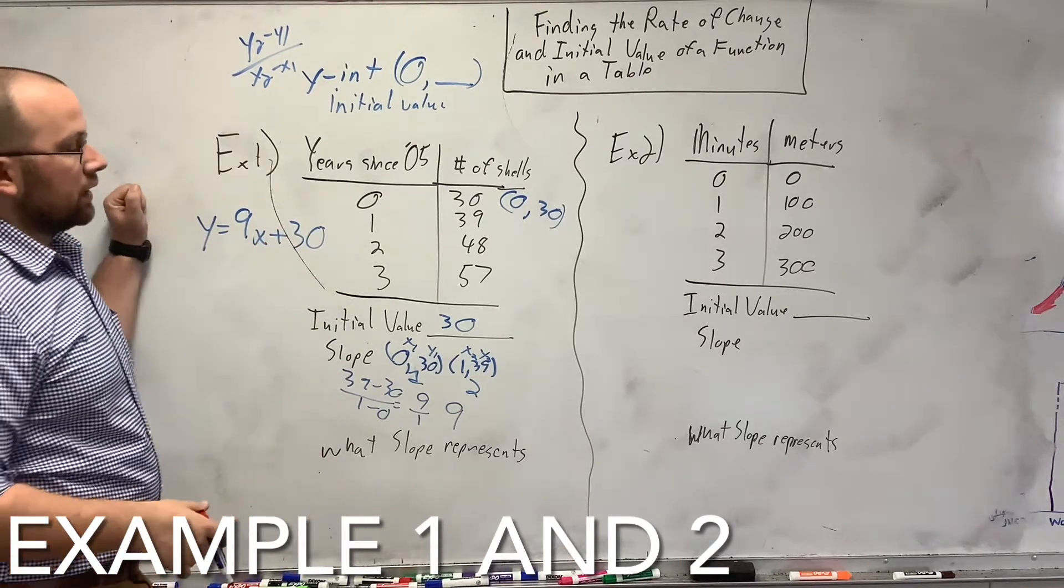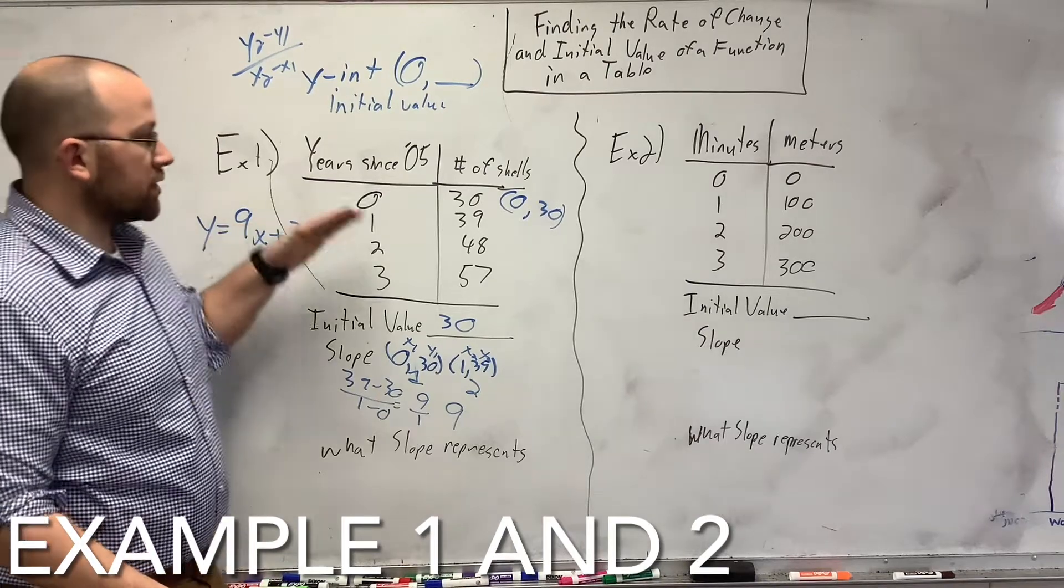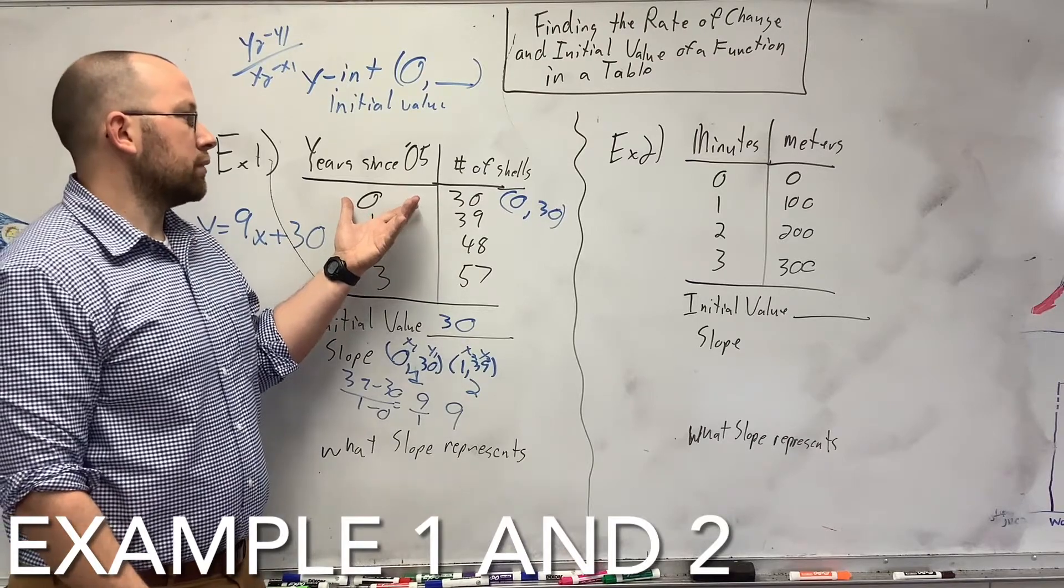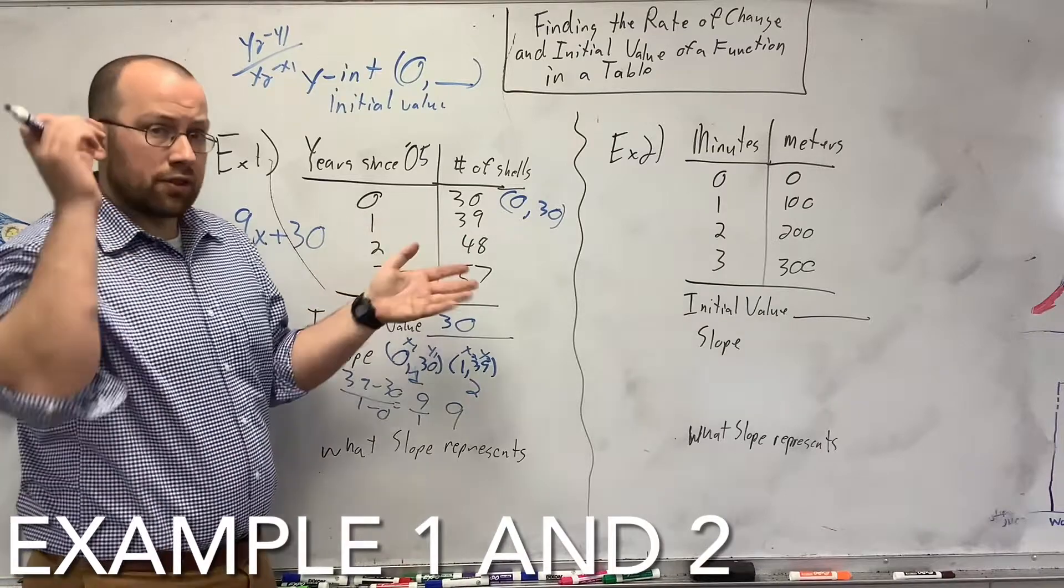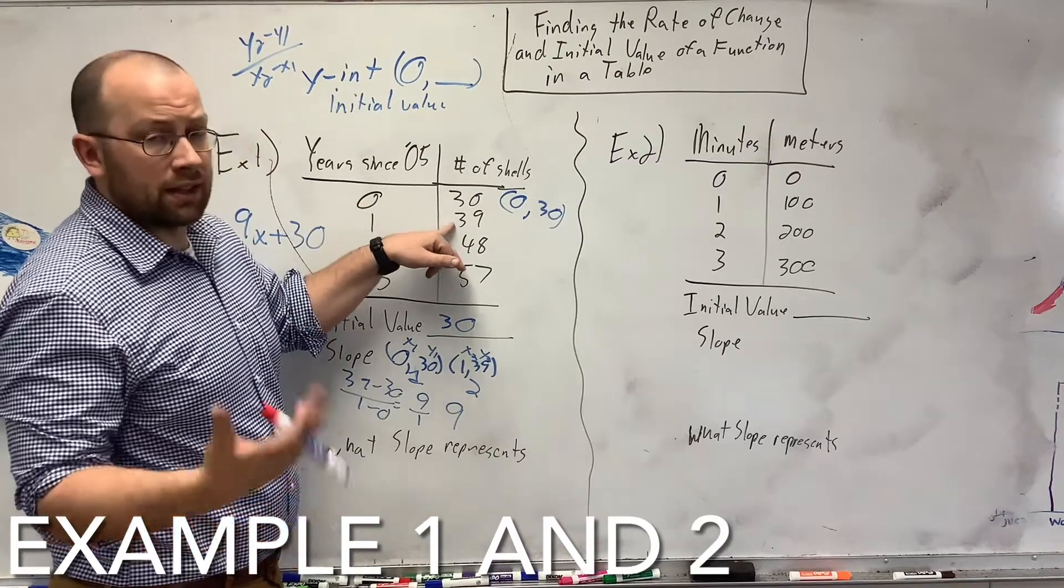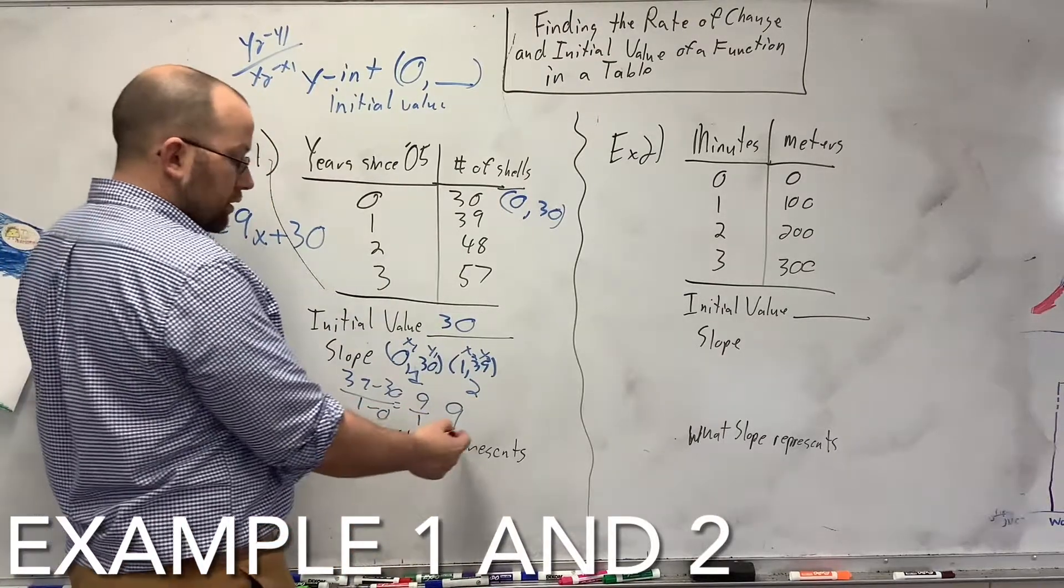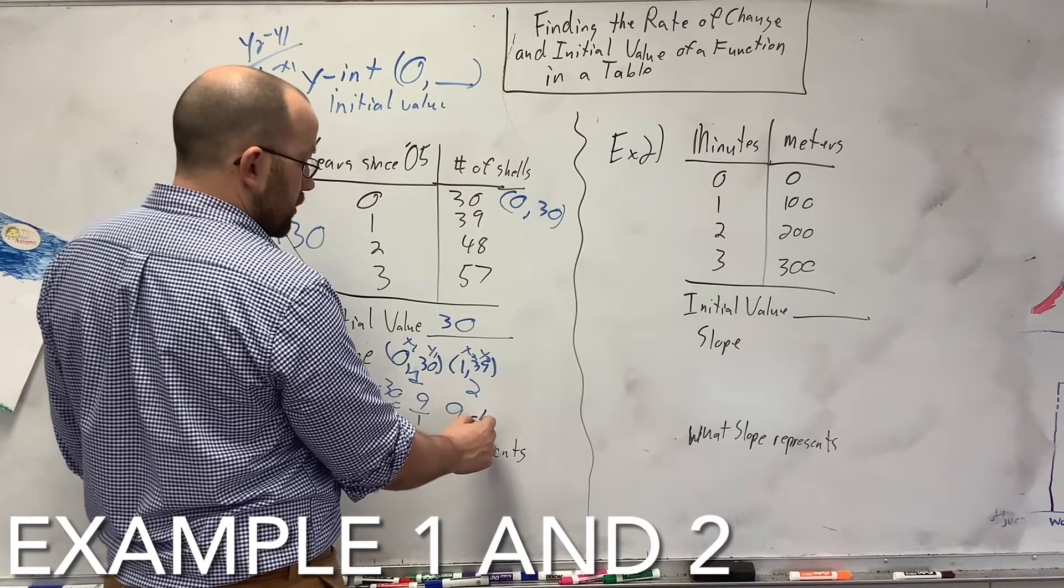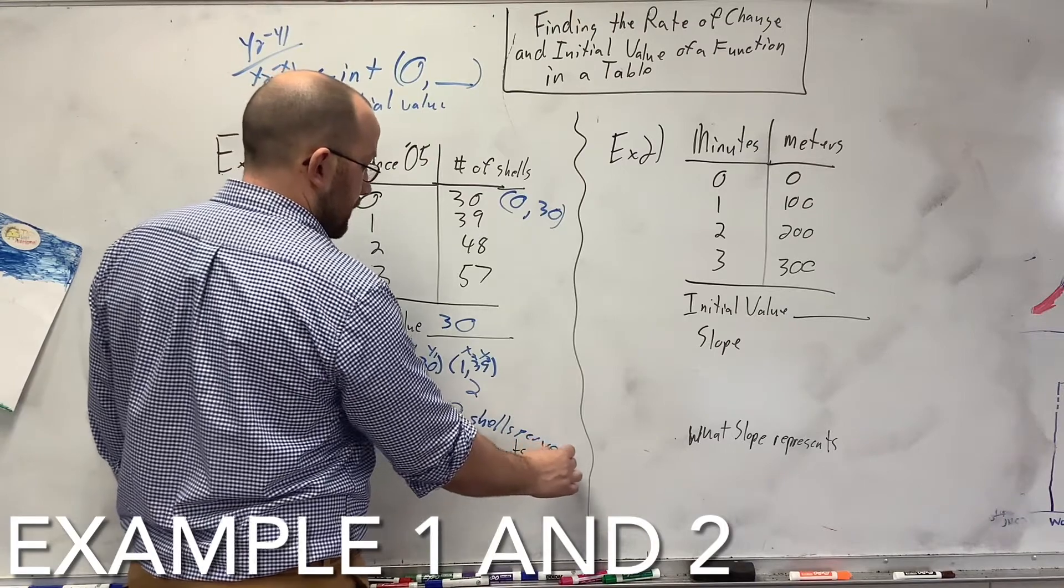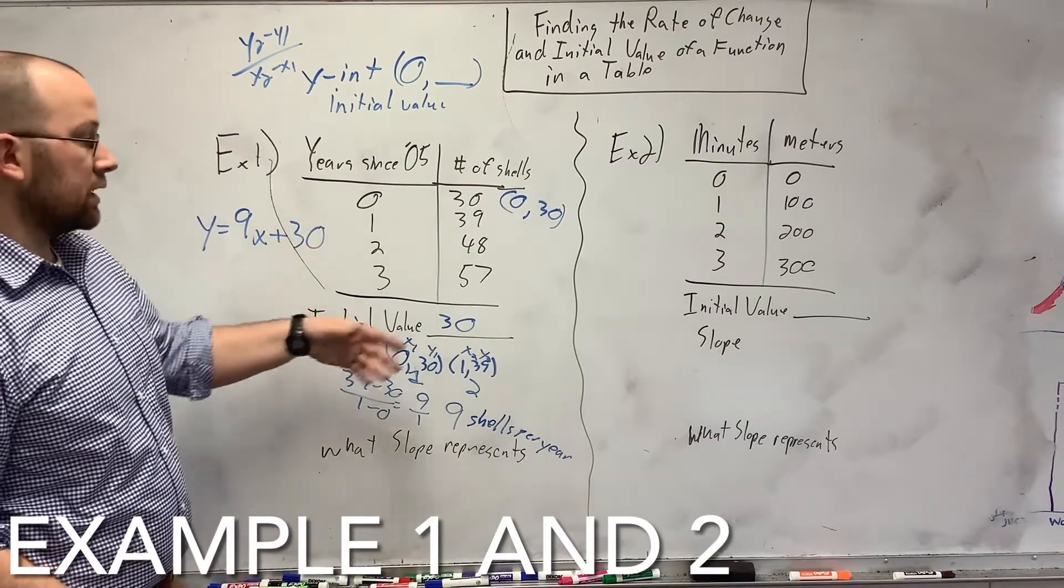Now, what does this represent? What does the slope represent? The slope represents the years, how many shells per year since 05. So, this person is collecting shells. They started collecting shells in 05 or they started to count. So, in 05, they collected 30 shells. That's their starting point. They want to know every year after that how many did they get. So, after one year, they have 39. They've collected 9 shells. Another year, another 9. So, that's what the slope represents. It's the shells per year.